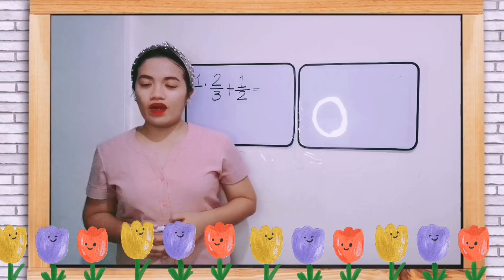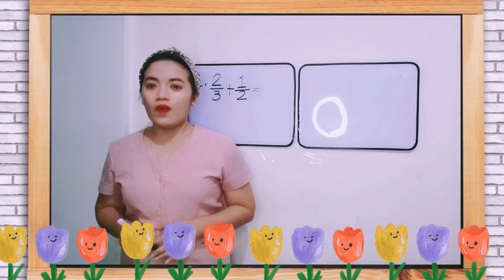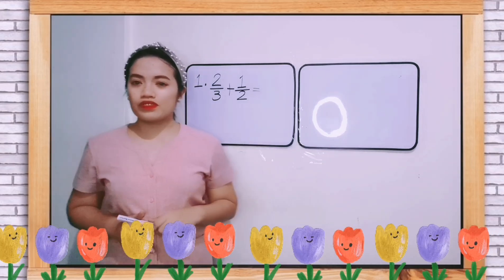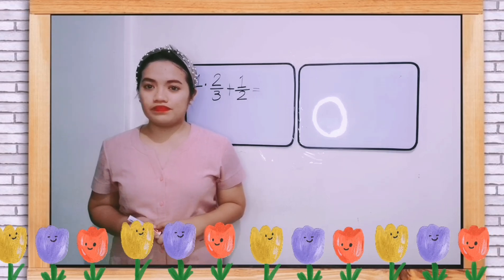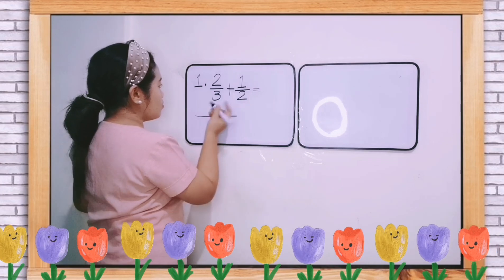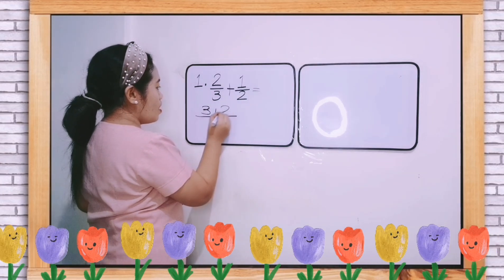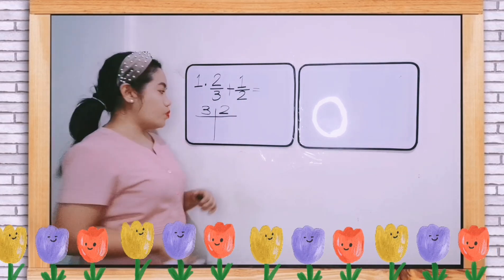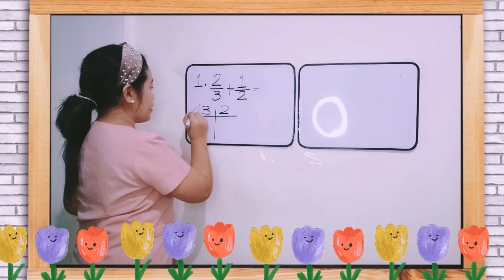To find the LCD of our denominators, we will multiply our denominators by the counting numbers. So let us write first a table. So let us get 3 and 2. We will multiply this by the counting numbers.